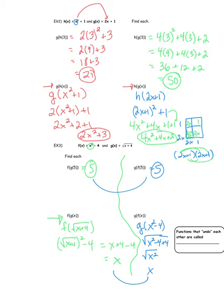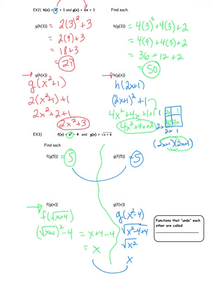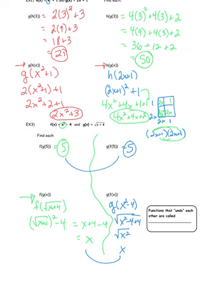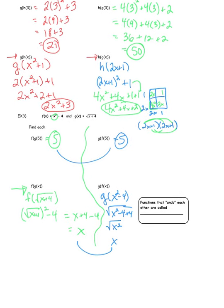That leads us into something we're going to focus on tomorrow. These functions undid each other — we started with 5, applied f then g and got 5 back; and started with 5, applied g then f and got 5 back. Functions that undo each other are called inverses. Inverse functions are functions that undo each other.